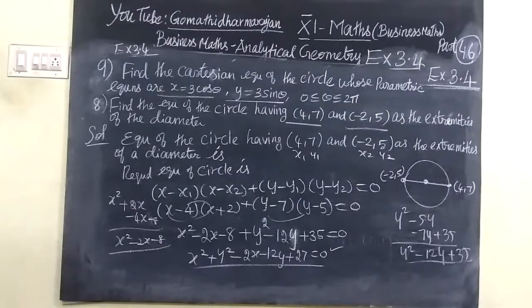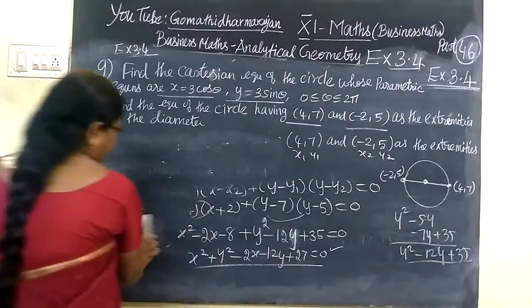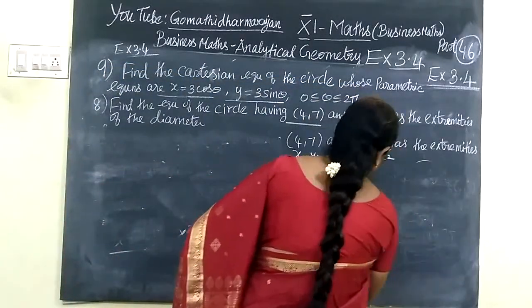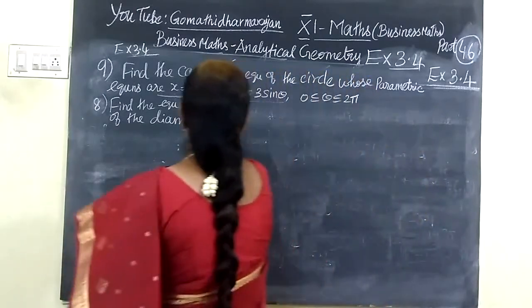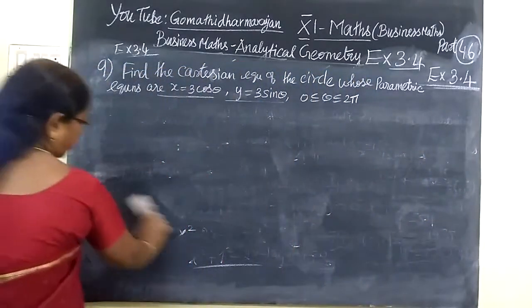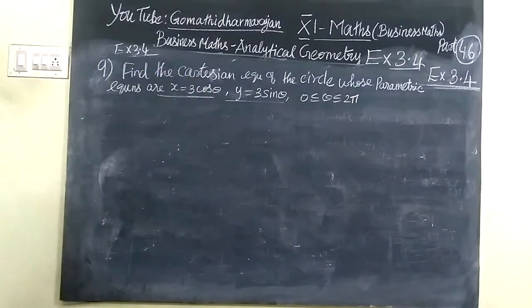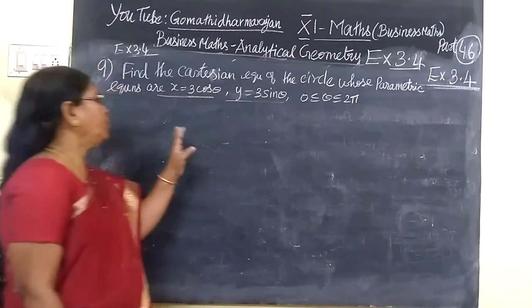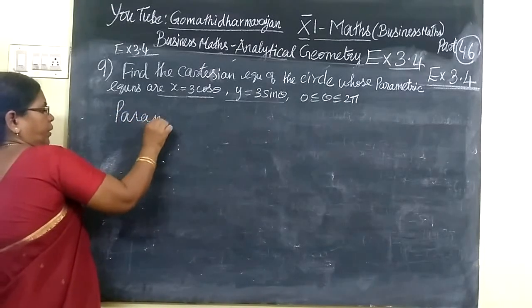And we do the next term. So we do the next one: find the Cartesian equation of the circle with parametric equation of the circle.